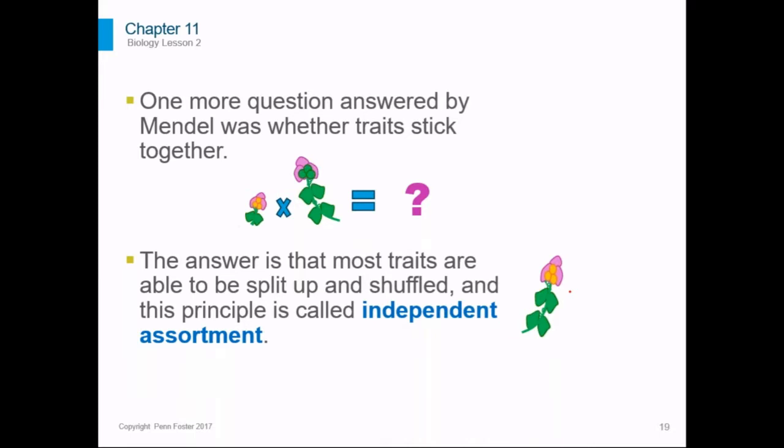This is something you could see in people. You could inherit your father's nose but your mother's eyes because they're independently assorted. You don't necessarily get all the same genes as other offspring do. So your sister and brother might have a different set of features inherited from the parents because they got different combinations of genes.